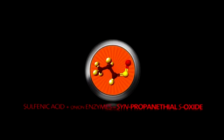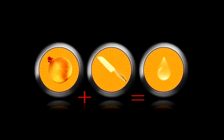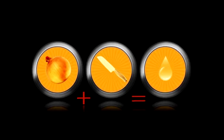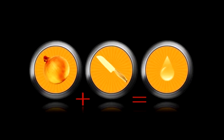The sulfenic acid and onion enzymes react to form synpropenethiol S-oxide. This tough-to-pronounce gas floats up from the chopped onions and eventually reaches your eyes.